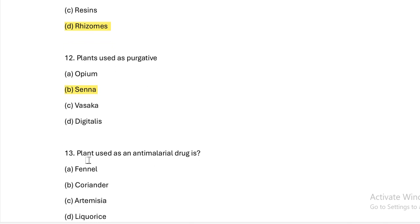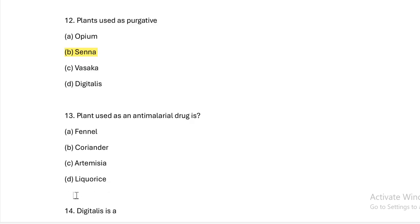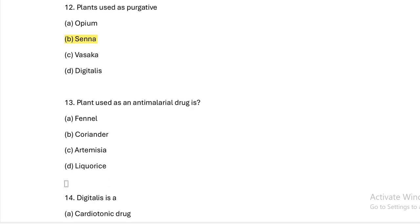Next question: Plant used as anti-malarial drug. Option A: fennel. Option B: coriander. Option C: artemisia. Option D: licorice. Answer — Option C, artemisia is used as an anti-malarial drug.